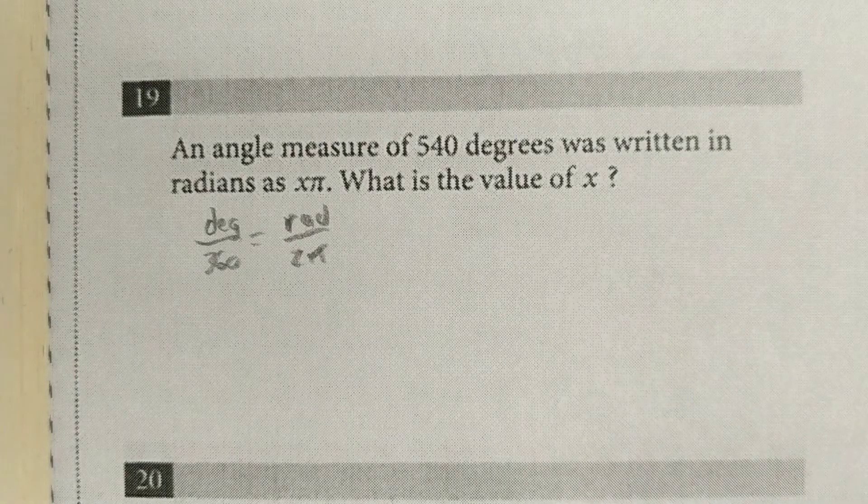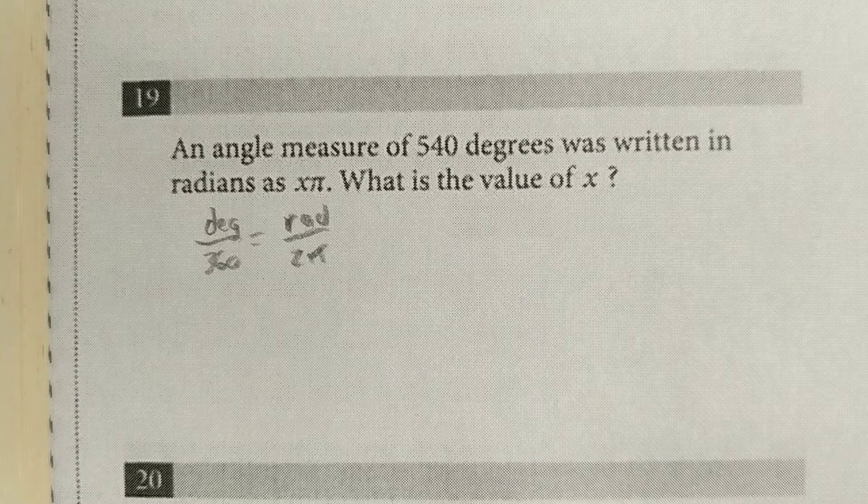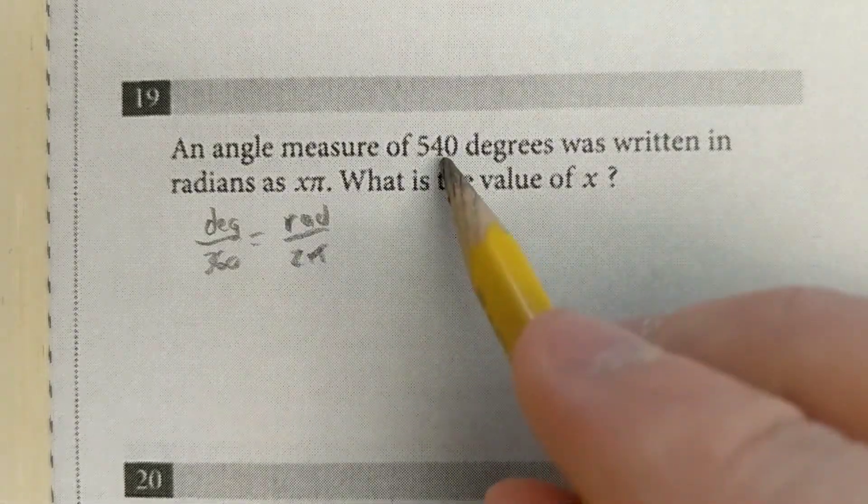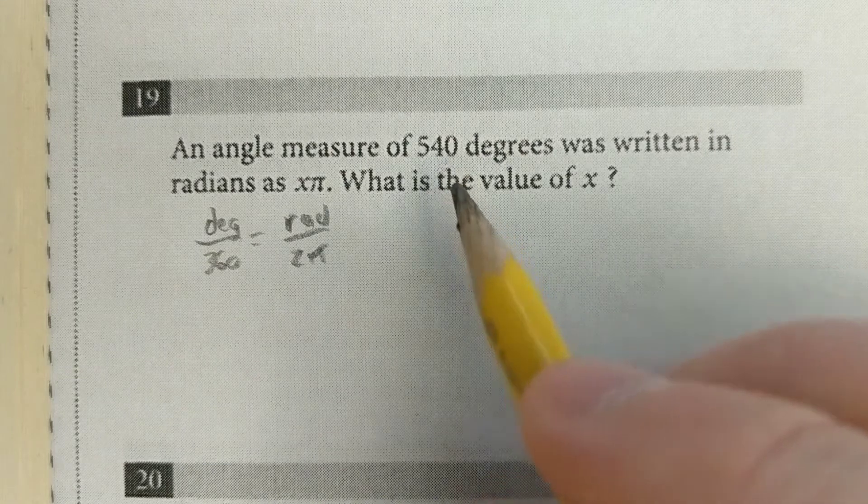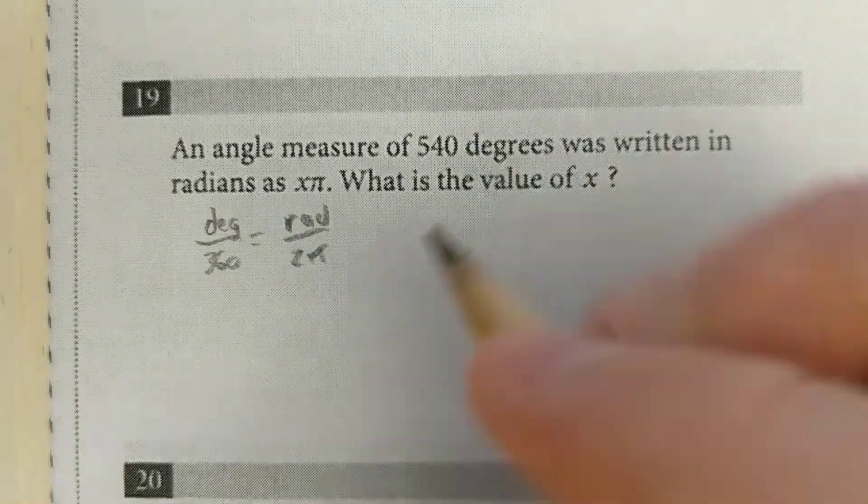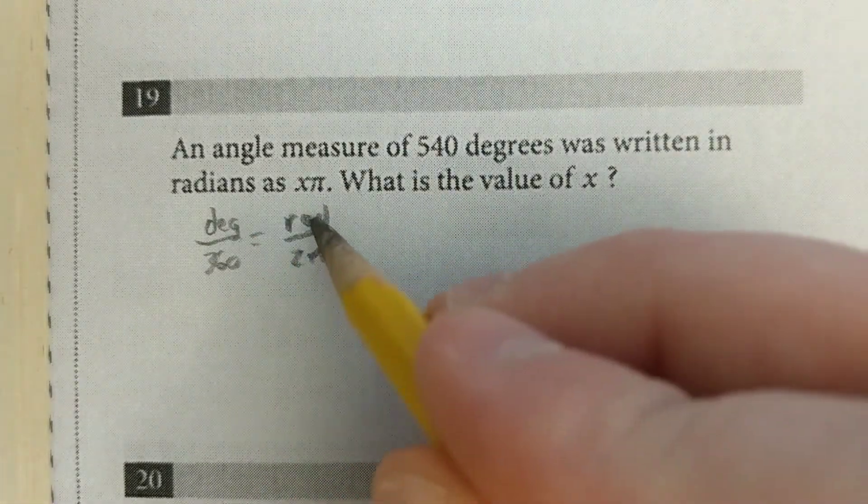This question from March of 2018 is almost identical to that last radians degrees conversion problem. So here they tell us that the angle is 540, and they want to know what the radians would be. So again, degrees to 360, radians to 2 pi.